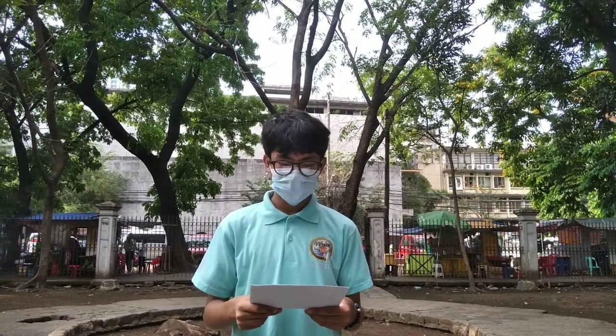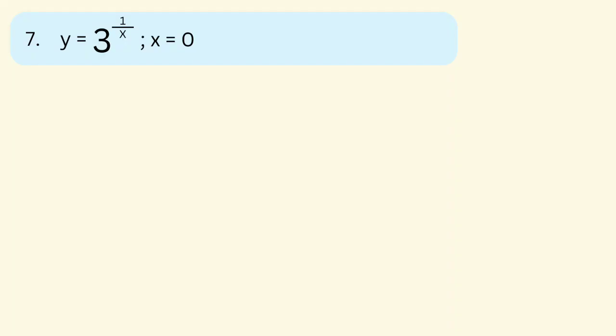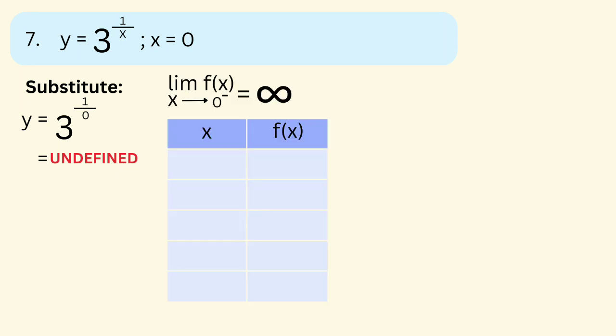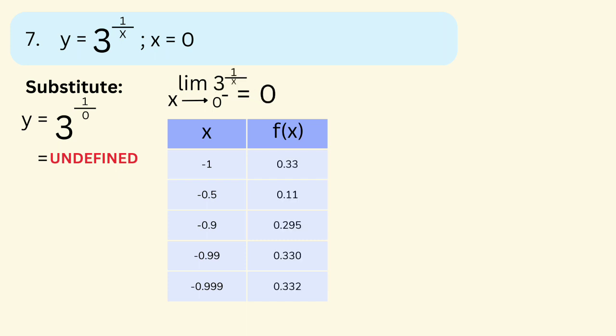For item number 7, y = 3^(1/x), if x = 0. Substituting 0 gives y = 3^(1/0), which is undefined. We proceed to creating a table. The limit of y = 3^(1/x) as x approaches 0 from the left, with x values −1, −0.5, −0.9, −0.99, and −0.999. Substituting each: for −1 we get 0.33; for −0.5 we get 0.11; for −0.9 we get 0.295; next is 0.330 and 0.332. So the limit as x approaches 0 from the left equals 0.